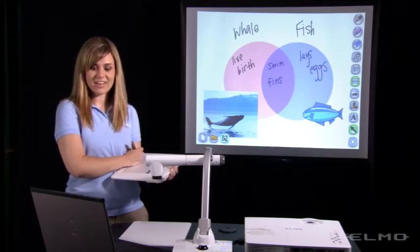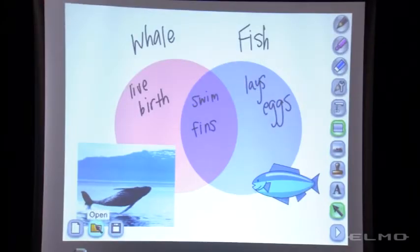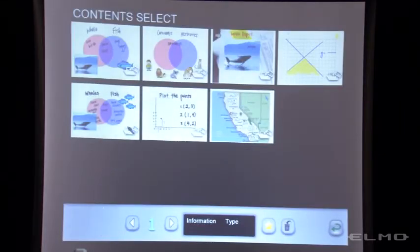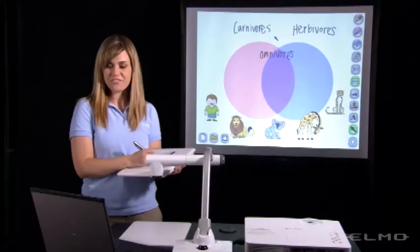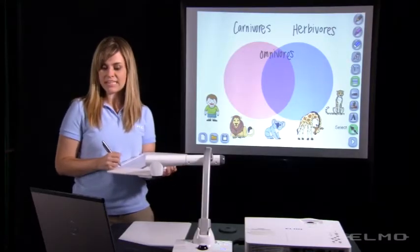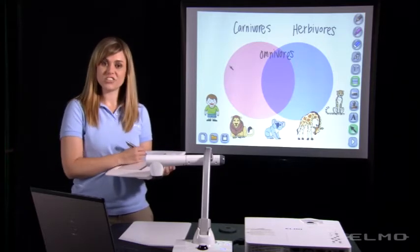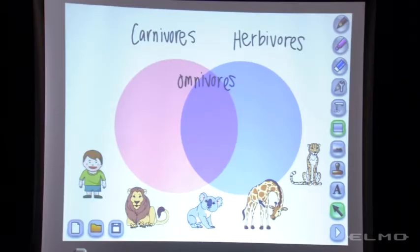When we want to open previously created contents we can click on the open and I can find a different activity that I've created here. Now I can use my select icon to reposition these stamps like so.